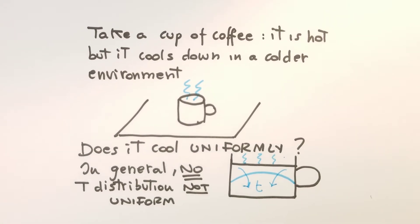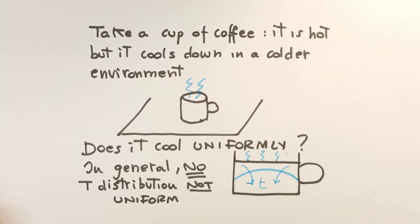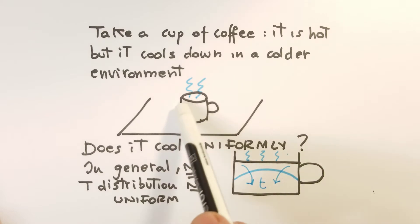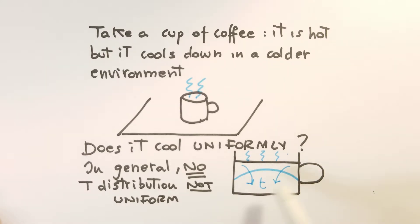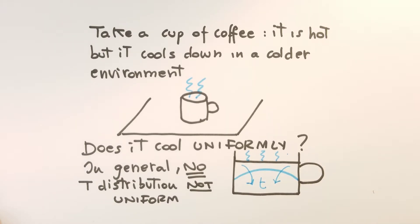Let's look at the case of a cup of coffee. We have a hot cup of coffee and we put it on the table; obviously it cools down over time in a colder environment. The question is: does it cool uniformly — meaning does the temperature profile depend on space? In general it is not uniform: the coffee will be hotter in the middle whereas on the surface of the cup it will be cooler, and the temperature distribution obviously will change over time.